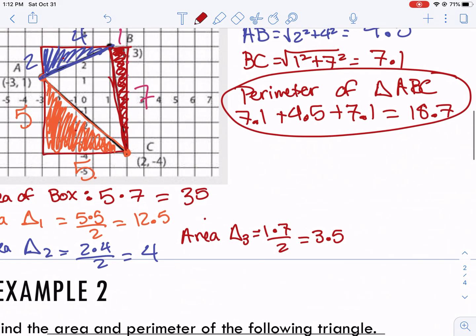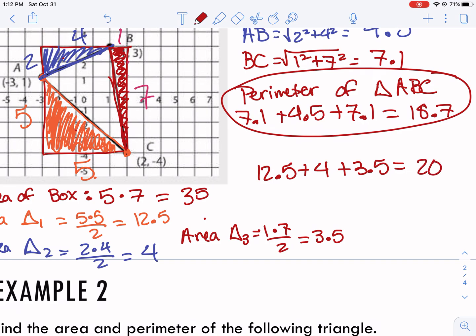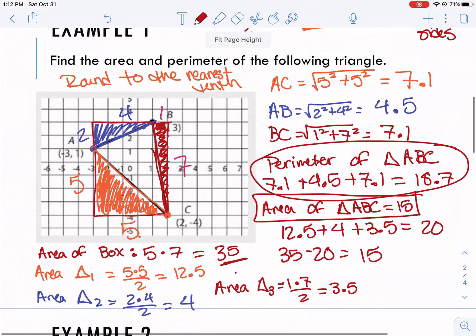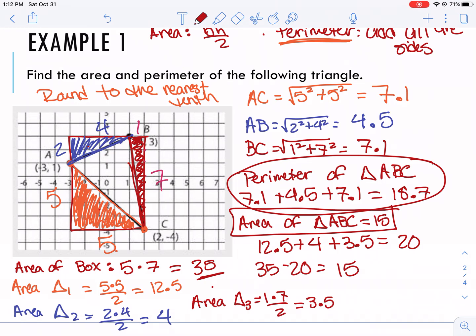So what we do now to find the area is I'm going to add up the area of the three triangles that I just found, which is 20, and we're going to subtract it from the box, because then whatever's left is the area of this missing triangle on the inside. So if we do 35 minus 20, we get 15. The area of triangle ABC equals 15. And those are our two answers for the area and the perimeter of this triangle.